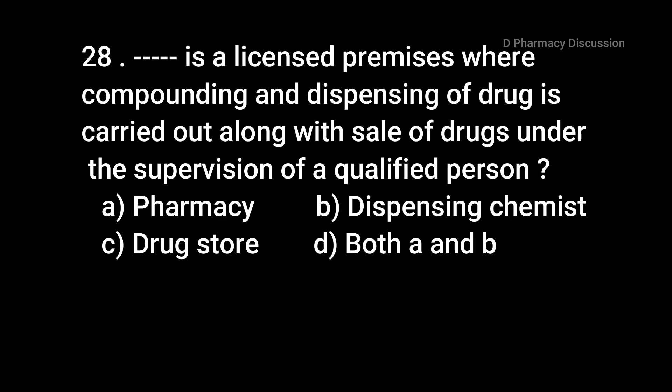Question number twenty-eight: a licensed premises where compounding and dispensing of drugs is carried out along with the sale of drugs under the supervision of a qualified person — options are A: pharmacy, B: dispensing chemist, C: drugstore, and option D: both A and B. The correct answer is option D, both A and B — that is the pharmacy or dispensing chemist.